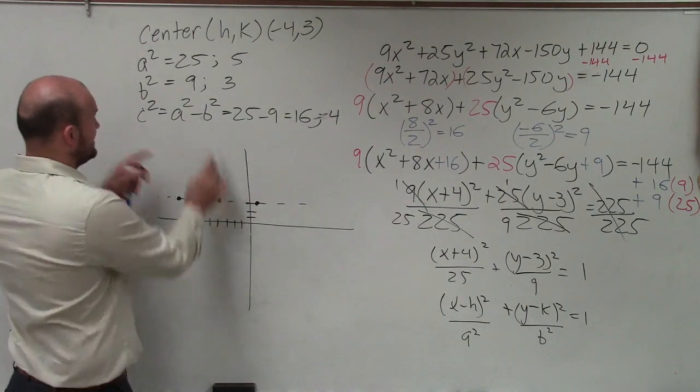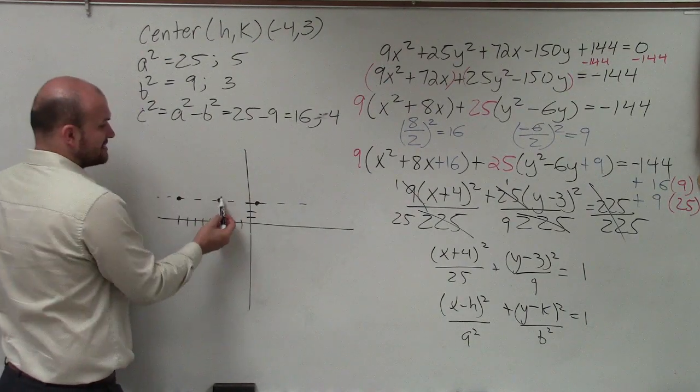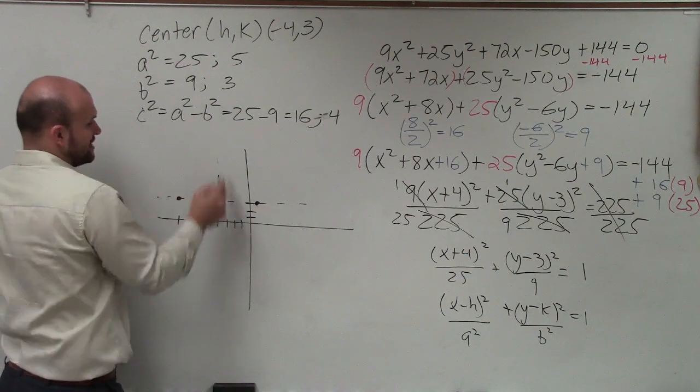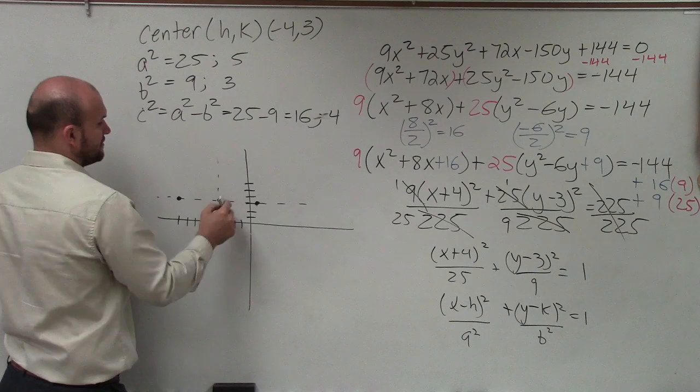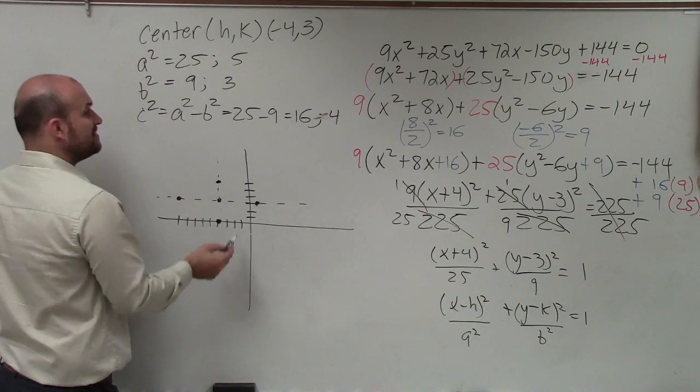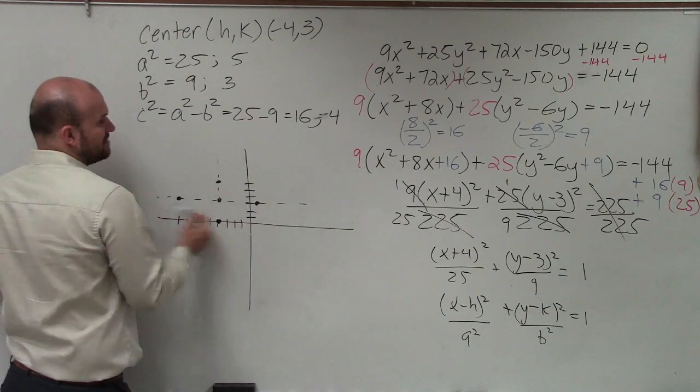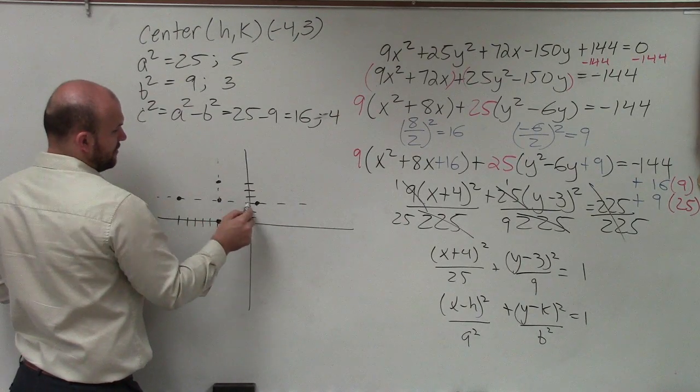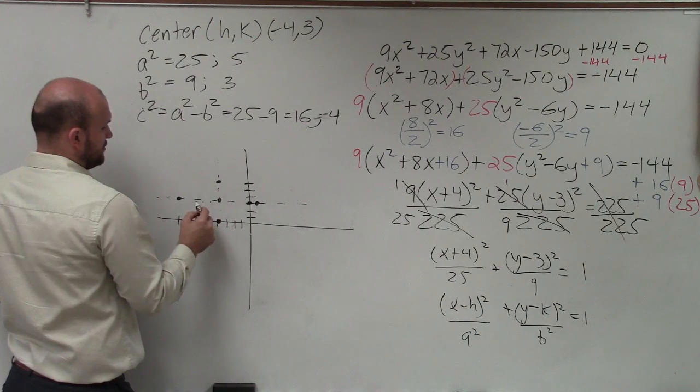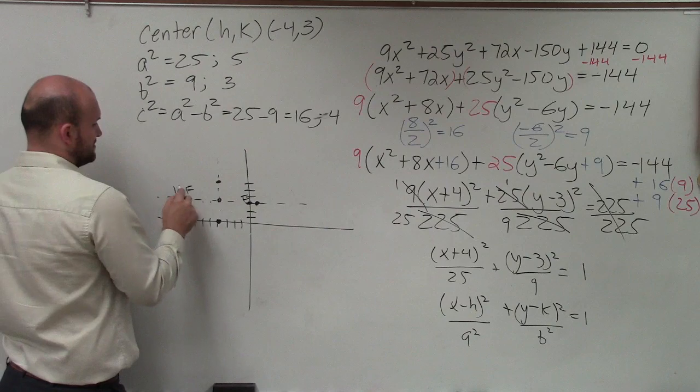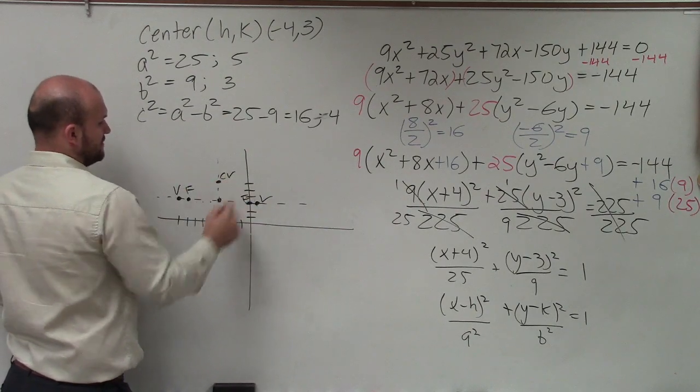Then to find the co-vertices, that's going to be on the minor axis symmetry, which is perpendicular to my major axis. So that's going to be up 3 units and down 3 units. Then the foci, again, has to lie on the major axis. That's going to be 4 units. So I go over 4 units to the right and left. And let's label these: Foci, foci, vertices, vertices, co-vertices, co-vertices.